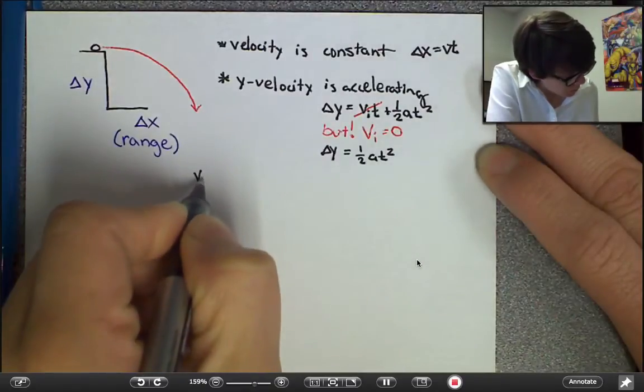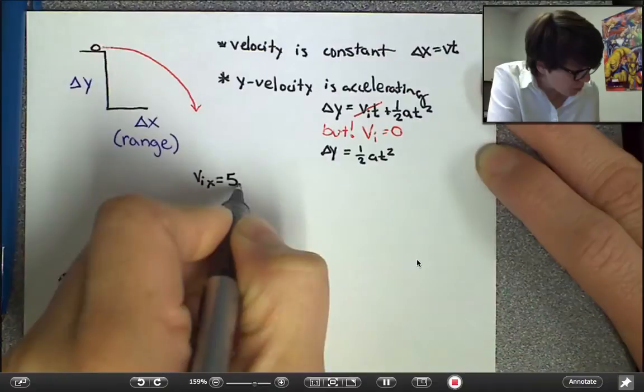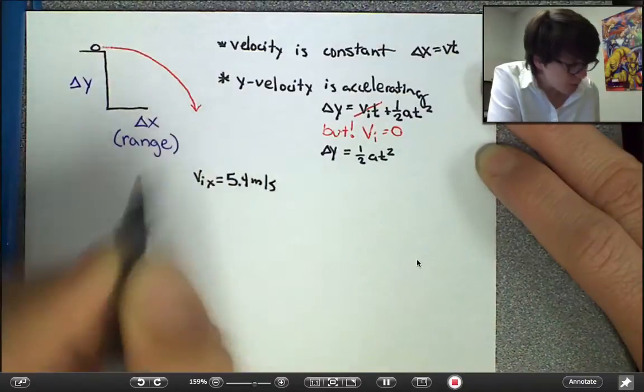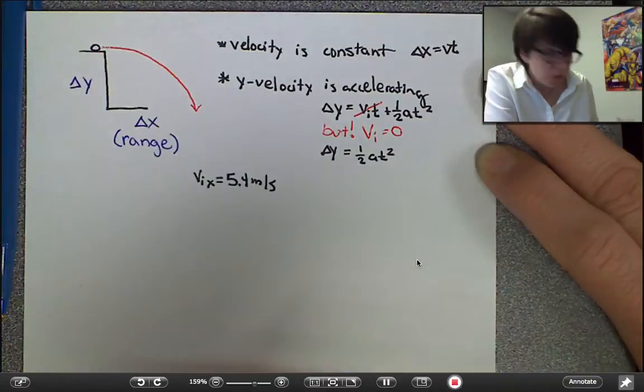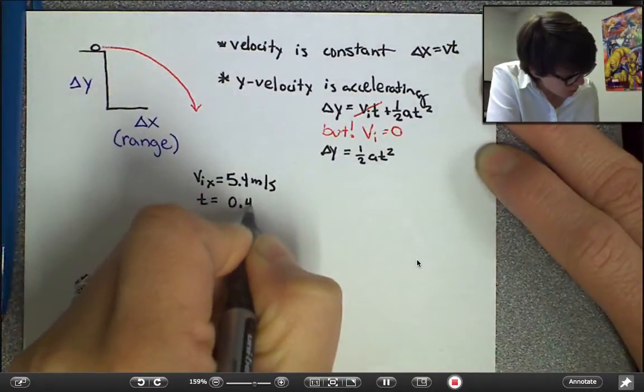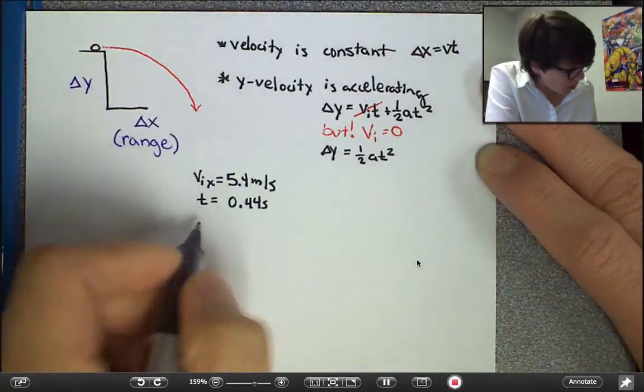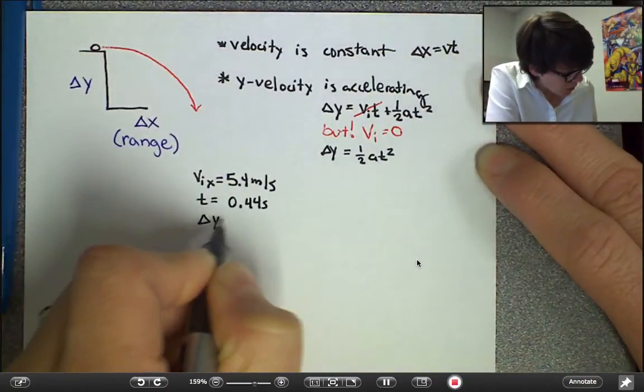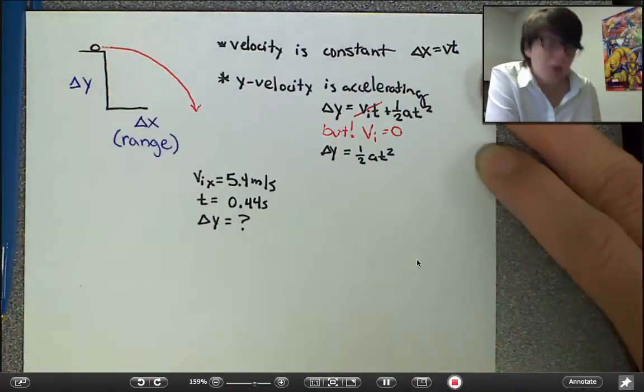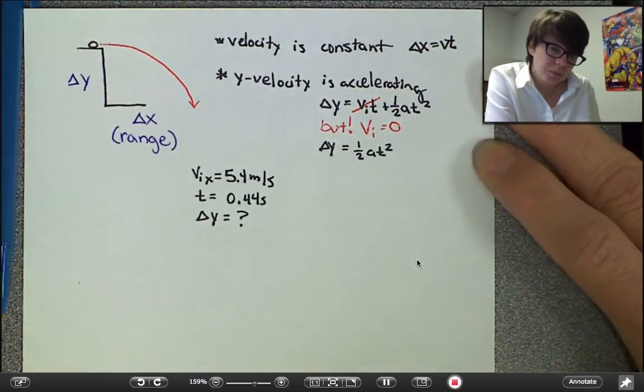For this particular problem, I have that the initial velocity is 5.4 meters per second in the x direction. The time it takes to fall is 0.44. And, in this case, I'm going to actually solve for the height of the table.